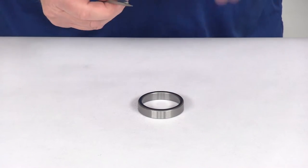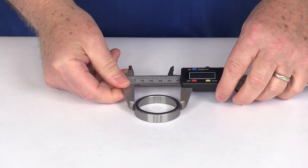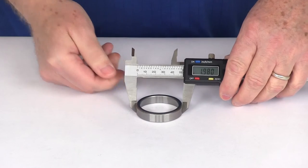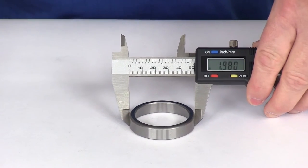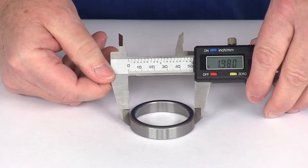And I'll try to zoom in so you can see. As we zoom in just a little bit, you'll be able to see the measurement on the outer diameter is 1.980.